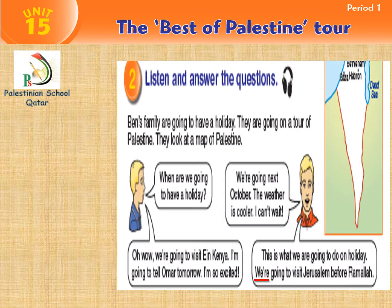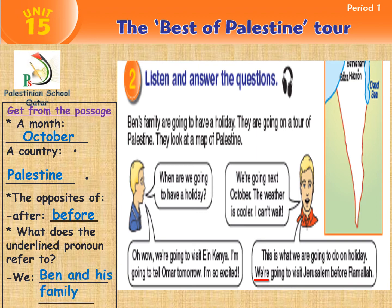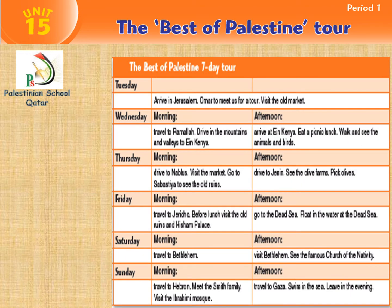Now we are going to answer some questions. Get from the passage: a month — yes, very good, October. A country — Palestine. The opposite of 'after' — yes, before, very good. What does the underlined pronoun refer to? The underlined pronoun is 'we' — 'we are going to visit Jerusalem before Ramallah.' 'We' refers to Ben and his family. Very good.